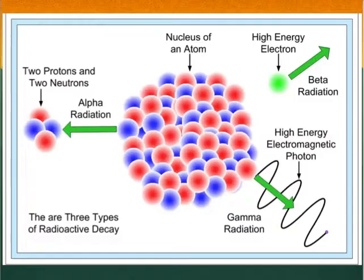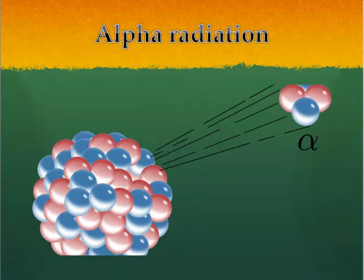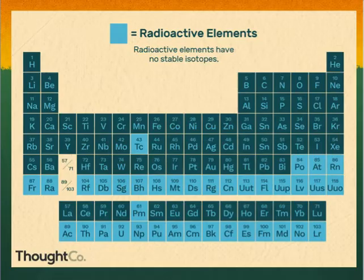The three most common types of radiation are alpha particles, beta particles, and gamma rays. Alpha radiation is the most dangerous because it is easily absorbed by cells. Beta and gamma radiation are not as dangerous because they are less likely to be absorbed by a cell and will usually just pass right through it.